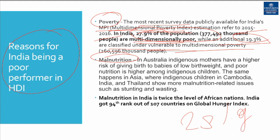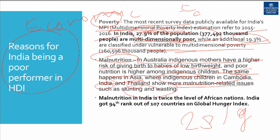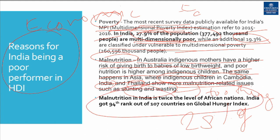Multi-dimensional poverty says that poverty is not just based on the economic aspect; it is related to several other aspects like education, social criteria, and work needs. Second is malnutrition. Indigenous children in Cambodia, India, and Thailand show more malnutrition-related issues like stunting and wasting. Malnutrition in India is twice the level of African nations, and the Global Hunger Index placed India at 94th rank out of 107 countries.